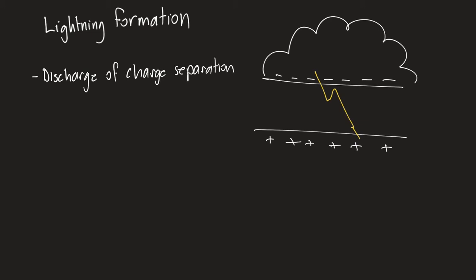This happens due to friction. Friction is when surfaces and particles rub against each other. When particles rub against each other, electrons from one particle can jump across to the other particle. The particle that loses electrons becomes positive and the particle that gains electrons becomes negative. If this happens enough, then we have a separation of charge.